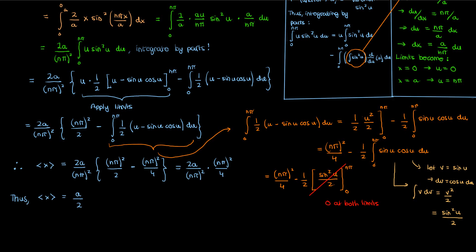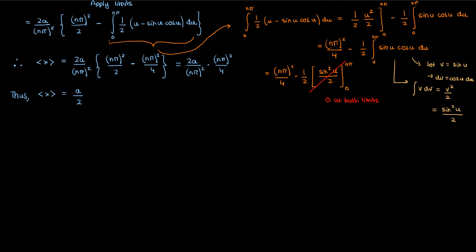This is interesting: the expectation value of the position for the nth stationary state does not depend on n. It doesn't matter whether it's the ground state (n=1) or an excited state — it's always a/2.